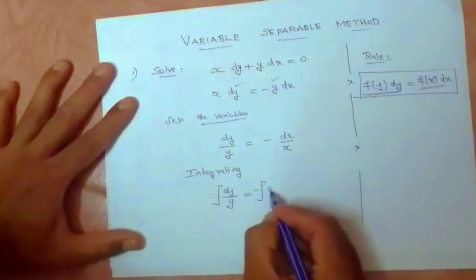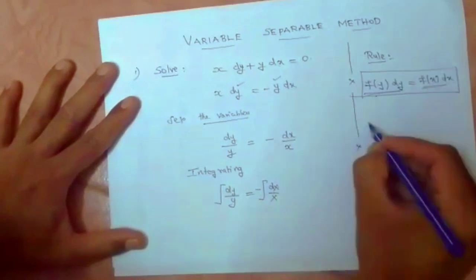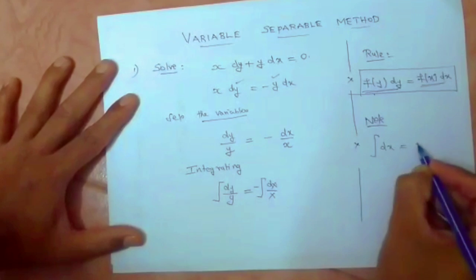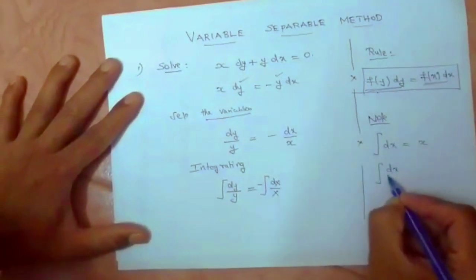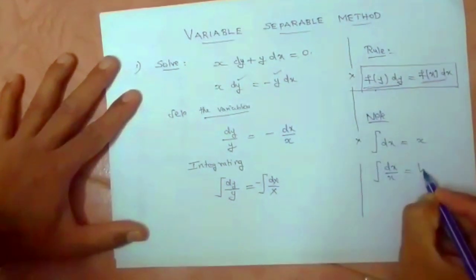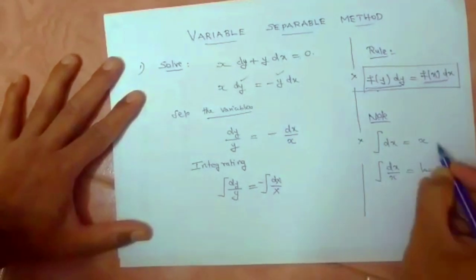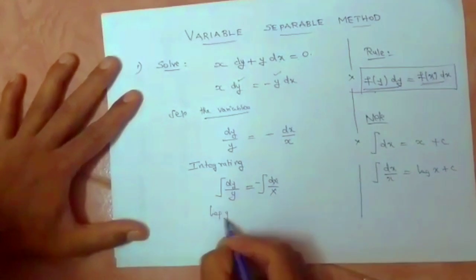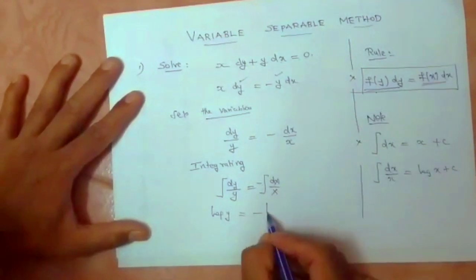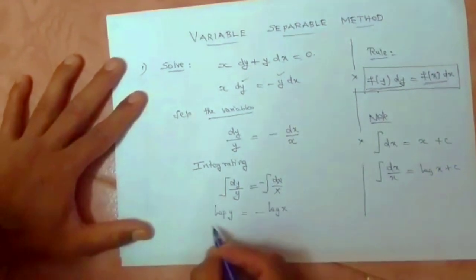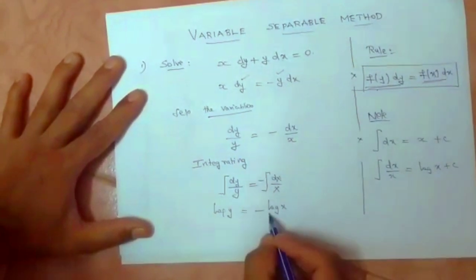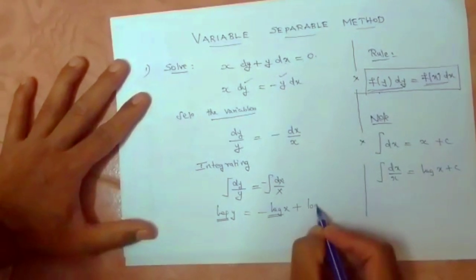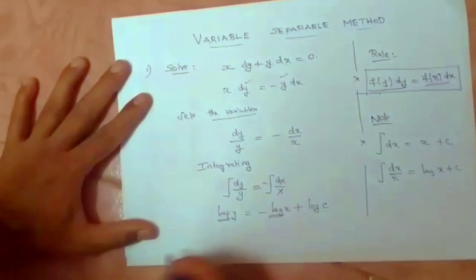As you all know, integration of dx is simply x, and integration of dx by x is simply log x plus some constant. So dy by y is log y, minus dx by x is log x. Each and every term is in terms of logarithm, so add this constant also in terms of logarithm: log c.